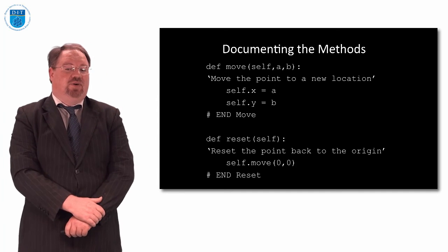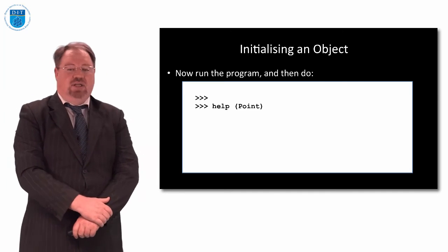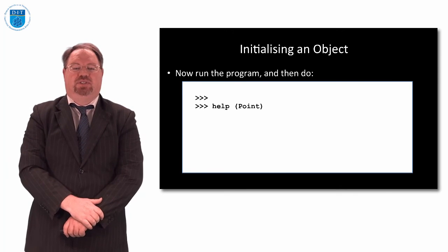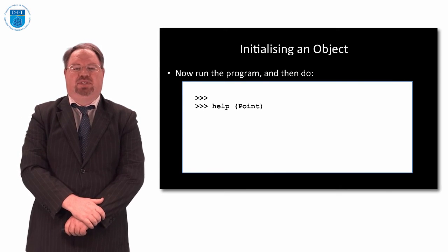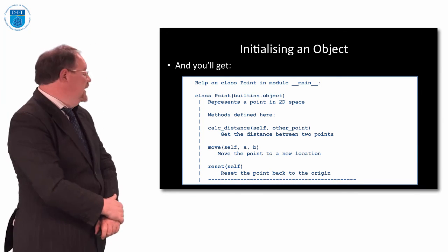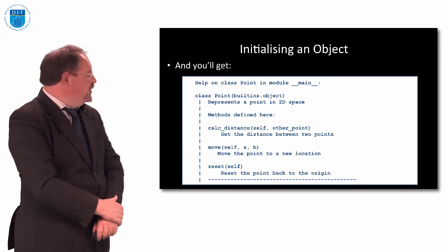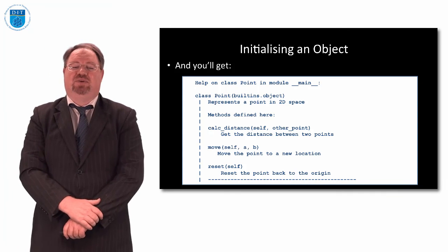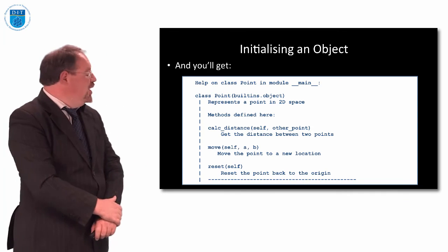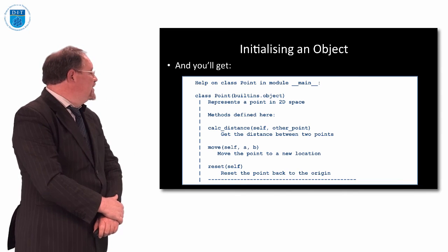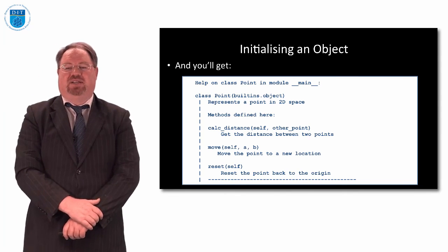So then if I go into, if I run our program and then I type in help, give me help on the class called point, tell me what I've got in point. What it'll give me is this, it'll say, the class point represents a point in 2D space. We have three methods, calc dist, which is to get the distance between two points. We have move, which is to move the point to a new location. And we've reset, that resets the point back to the origin.